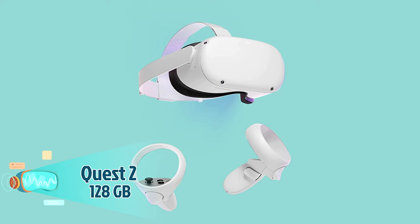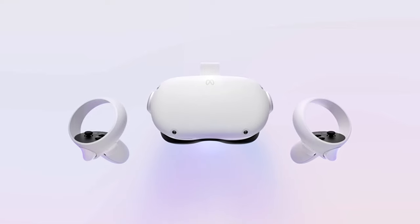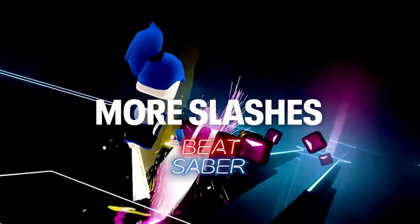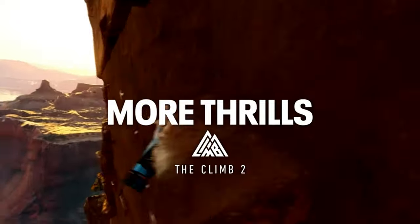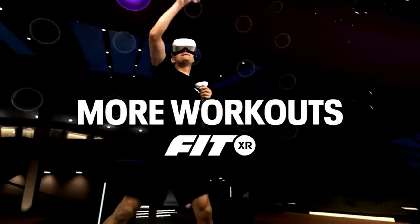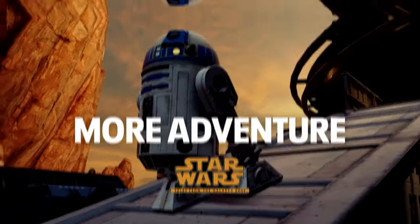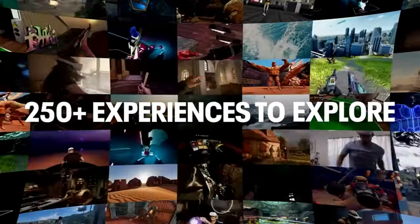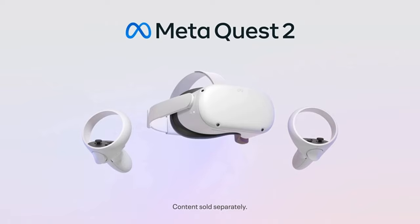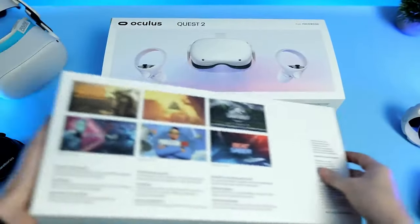Number 7: Quest 2 128GB. Meta's Quest 2 is a high-tech, all-in-one virtual reality headset with 128GB of storage that gives you a full immersion experience. The 3D positional audio, hand tracking, and simple controls make it feel like you're really in a virtual world.